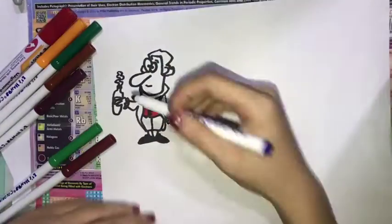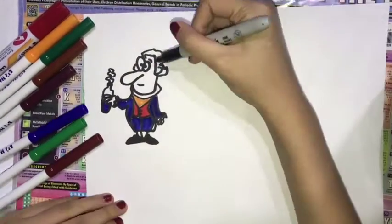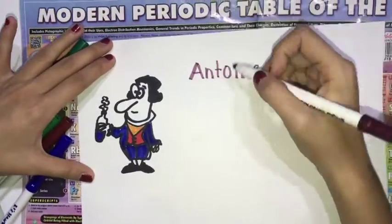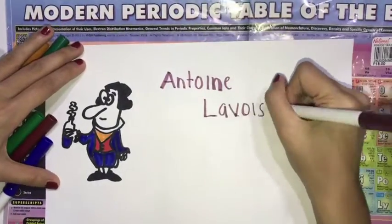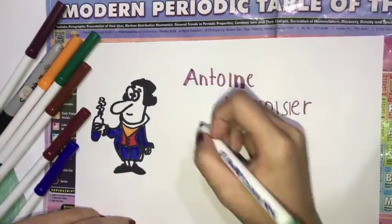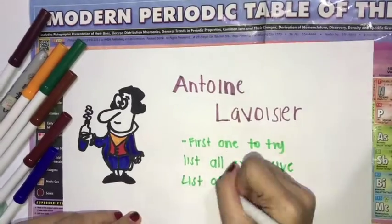Anson LaVouset was the first one who tried to have an extensive list of 33 elements. He also distinguished the metals and the non-metals.